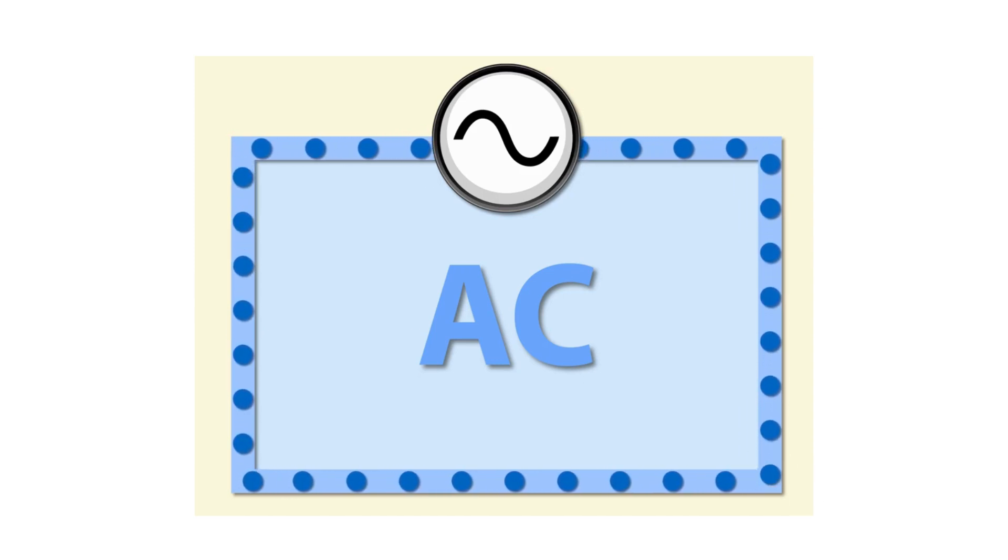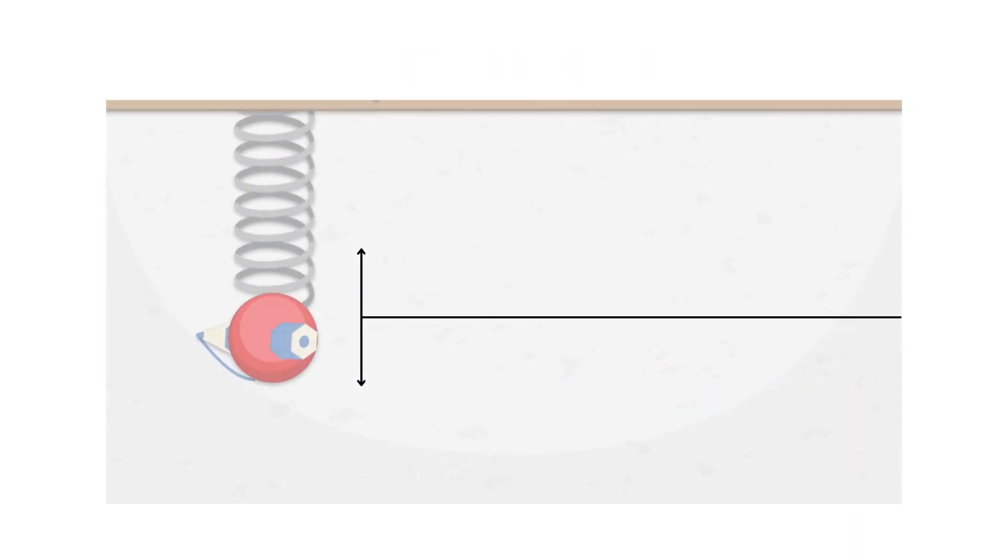This means that the average displacement of the electrons within the conductor over time is zero. Current is the flow of charge,